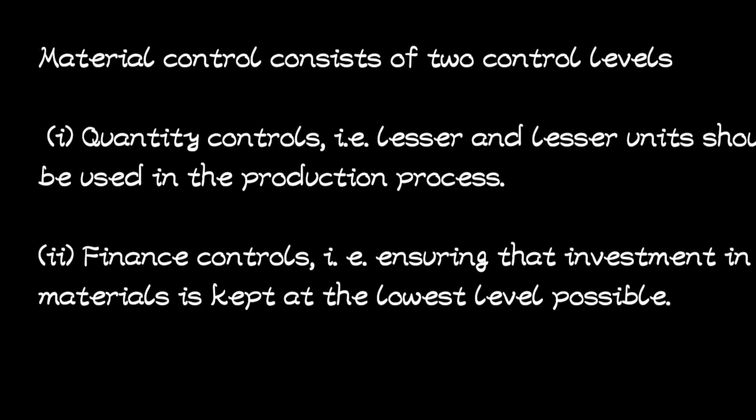Materials control consists of two control levels. The first is quantity control, and the second is finance control. Quantity control ensures that fewer units are used in the production process — they try to utilize every material so that less is used. Finance control ensures that investment in materials is kept at the lowest level possible, putting in less money in materials. Quantity control deals with numbers; finance control deals with figures.